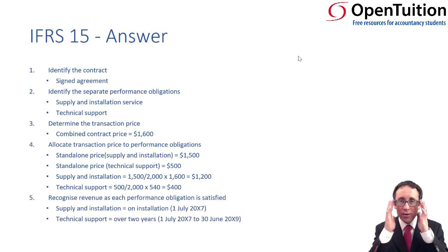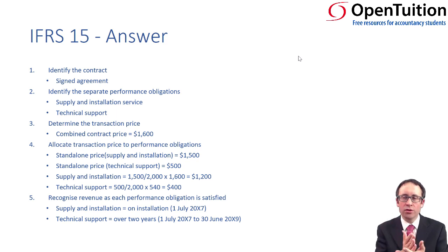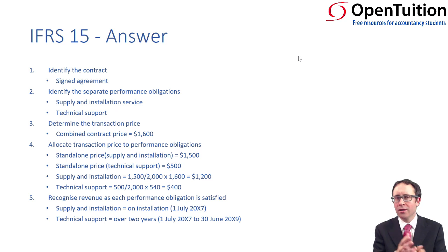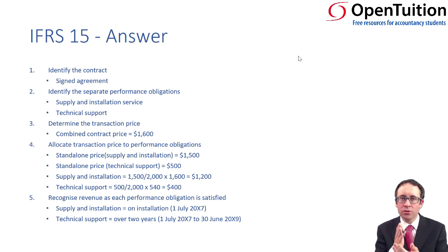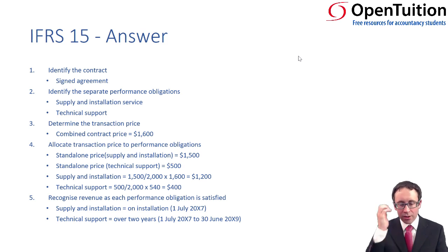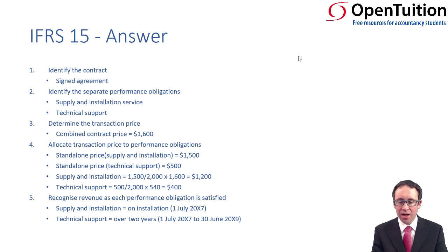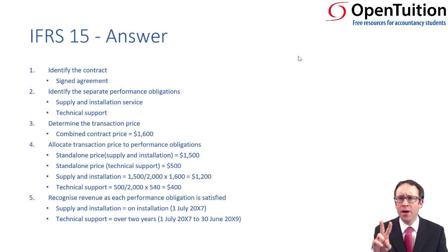Now we need to pay particular attention to the dates. The installation is the sale of goods, so it is recognised on the date the installation happens. Assuming that the installation date and the date the contract is signed are the same — the 1st of July — we're going to recognise $1,200 immediately. The technical support runs over two years, from the 1st of July to the 30th of June X9.